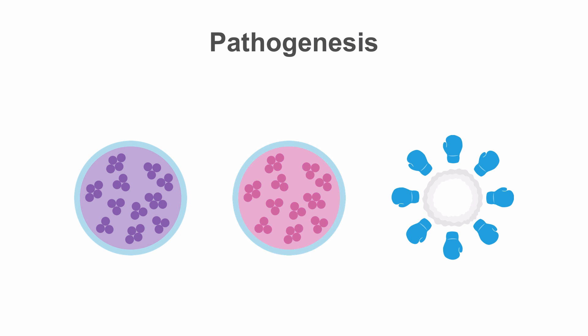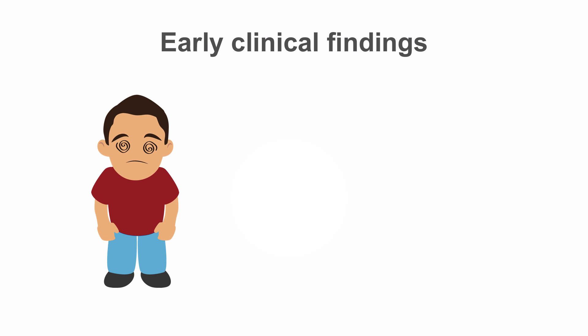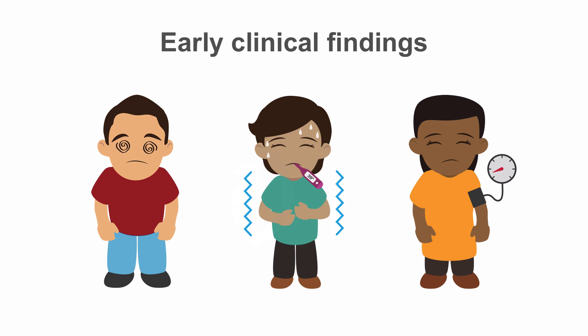Some patients with sepsis are obviously acutely ill upon presentation, with confusion, high fever, and chills, and hypotension resulting from widespread vasodilation.